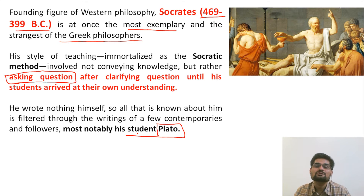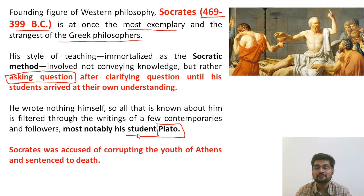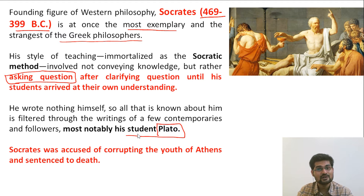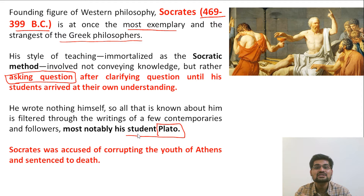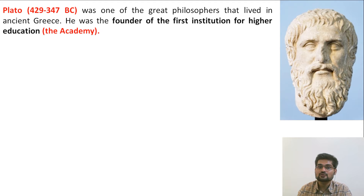Socrates wrote nothing himself — whatever exists in this realm of knowledge was written by his students, most famously Plato. Plato's most renowned scholar was Aristotle, who taught Alexander. Socrates was accused of corrupting the youth because he encouraged questioning existing traditions and rulers. He was a rebel teacher who inculcated a thought process in his students to learn more, to question what exists, and to find more answers.